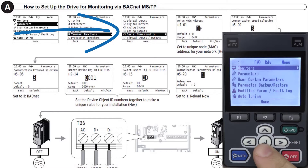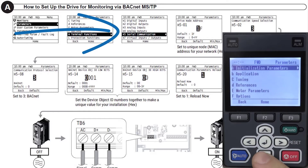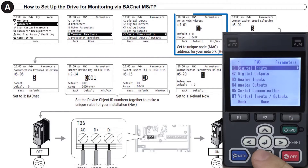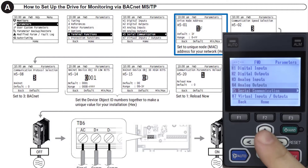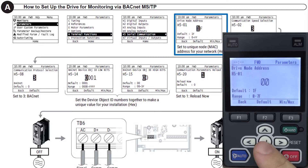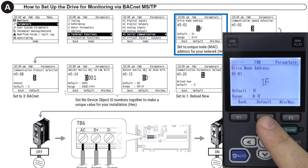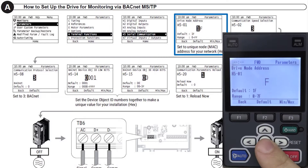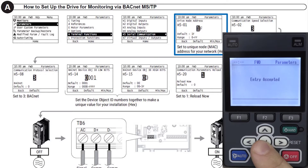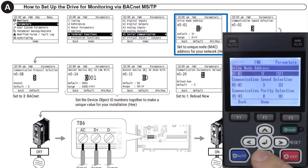First, navigate to the parameter group H5 Serial Communication. Set H5-01 to a unique node address for your local MSTP network. This value is entered via hexadecimal format. After, press Enter to confirm with an entry accepted message.